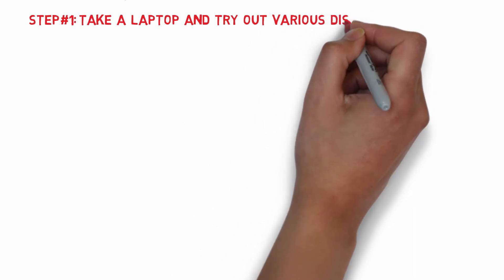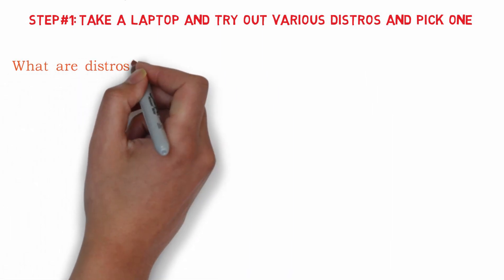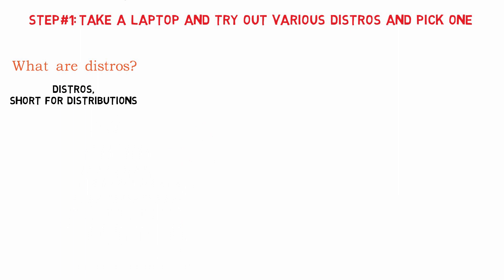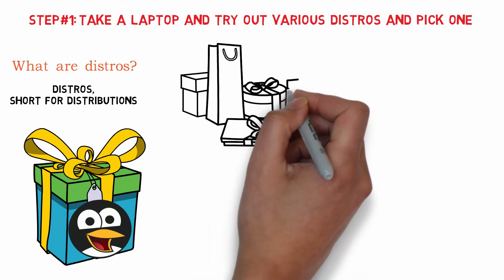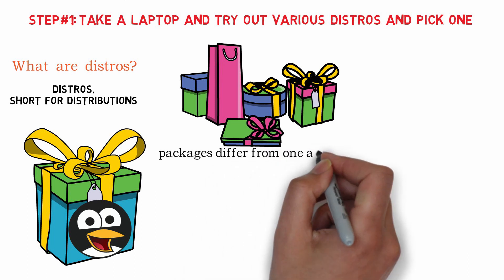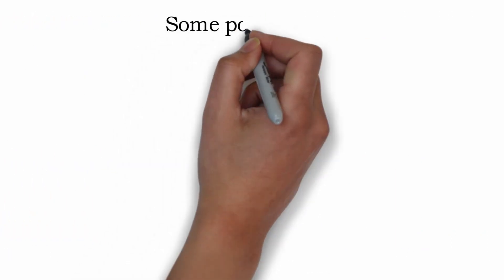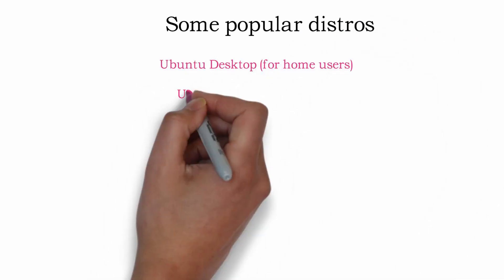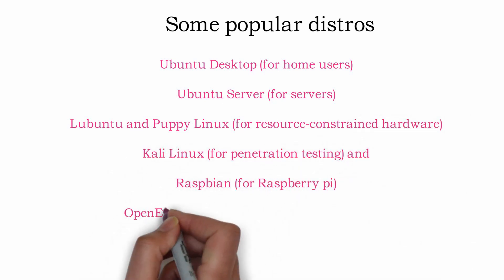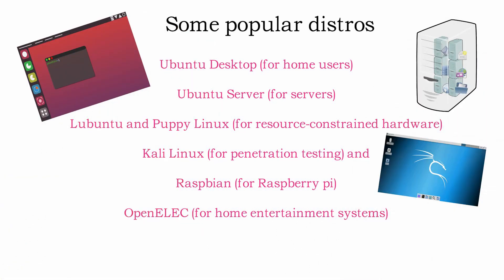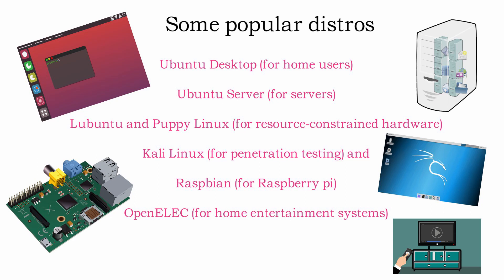Step number one: take a laptop and try out various distros and pick one. Distros, short for distributions, can be simply thought of as packages of the Linux kernel and some applications grouped together for easier installation. These packages differ from one another and are made keeping in mind different kinds of end users. Some of the popular distros include Ubuntu Desktop for home users, Ubuntu Server for servers, Lubuntu and Puppy Linux for resource-constrained hardware, Kali Linux for penetration testing, Raspbian for Raspberry Pi, and OpenELEC for home entertainment systems.